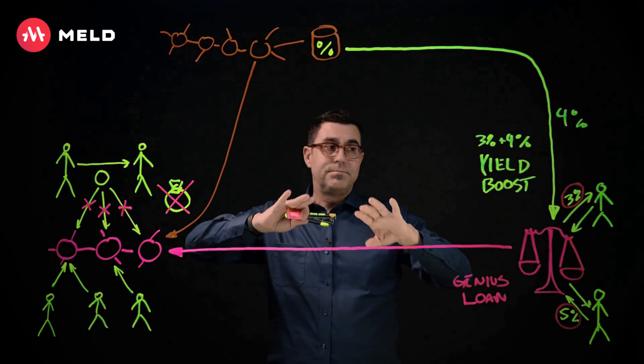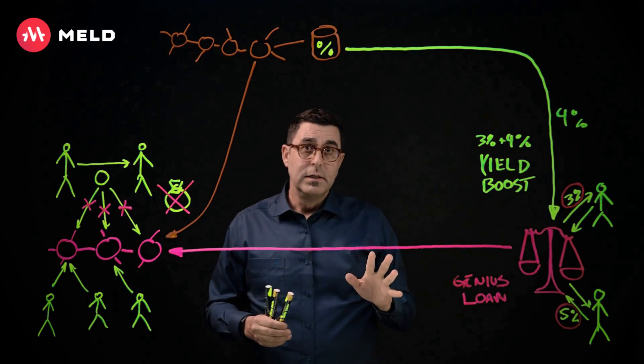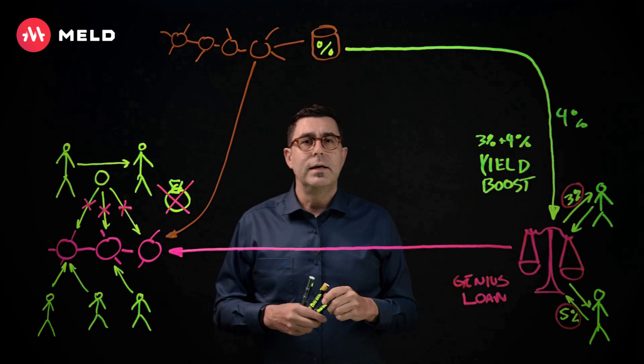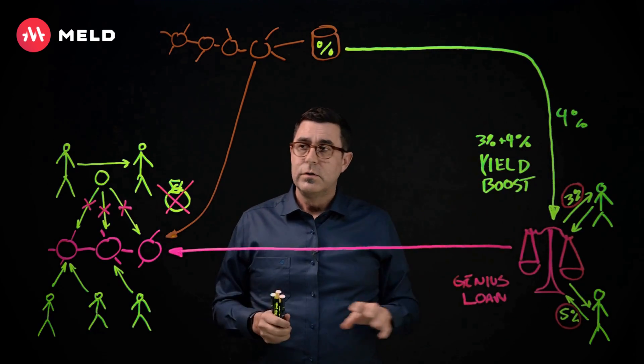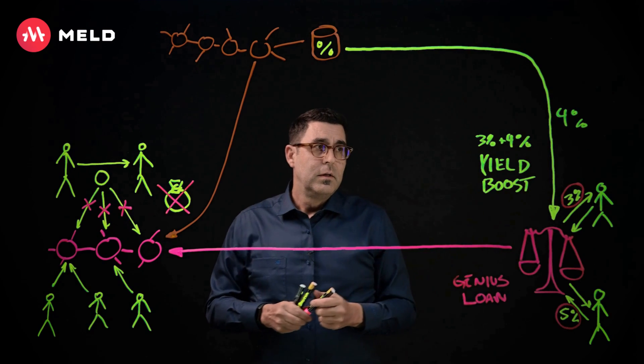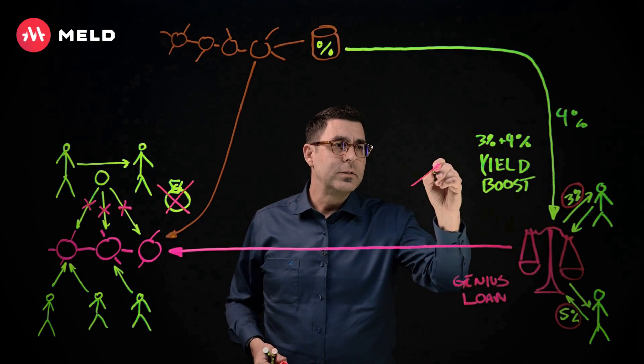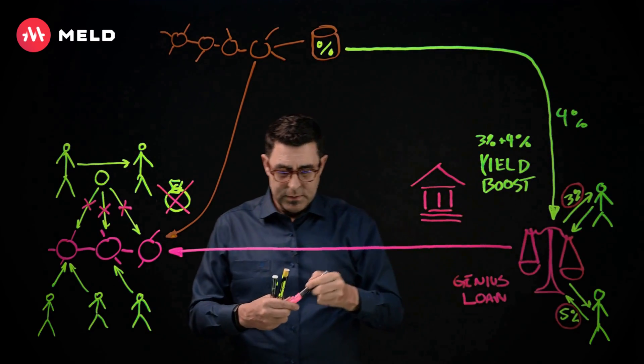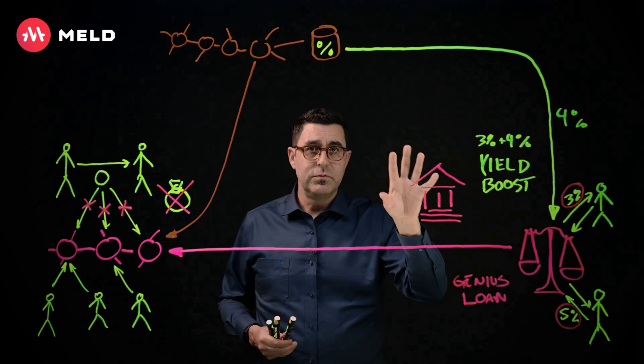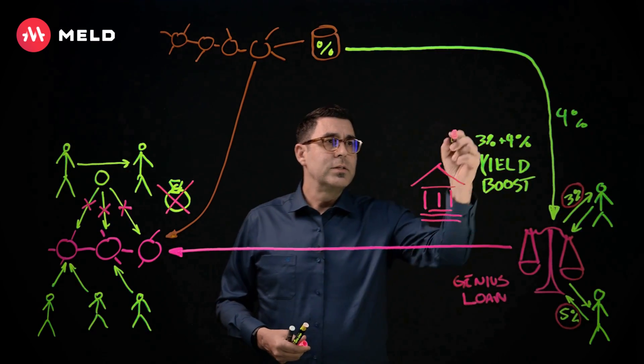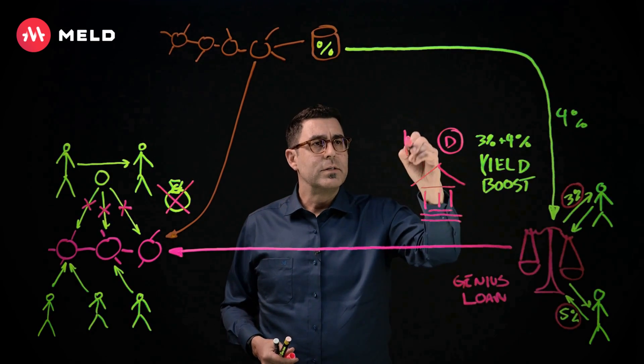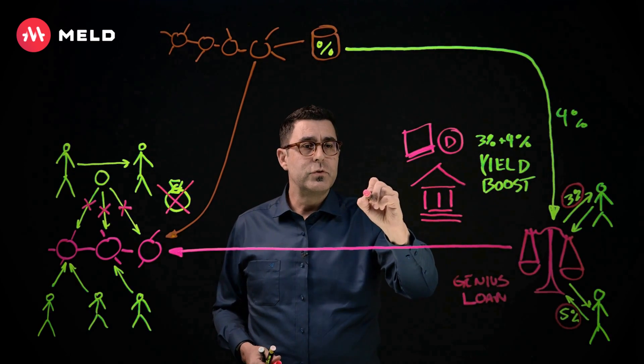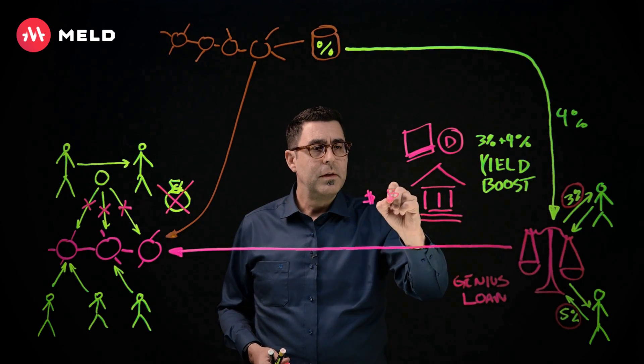So this is a lot. But we have one more thing. So MELD, the name, came from the idea of being able to bring together crypto and fiat. So MELD also has fiat services and fiat rails. So what this means is we have connections into traditional financial institutions, allowing us to have depository accounts, allowing us to have debit cards, and allowing us to be able to do on-ramping and off-ramping.